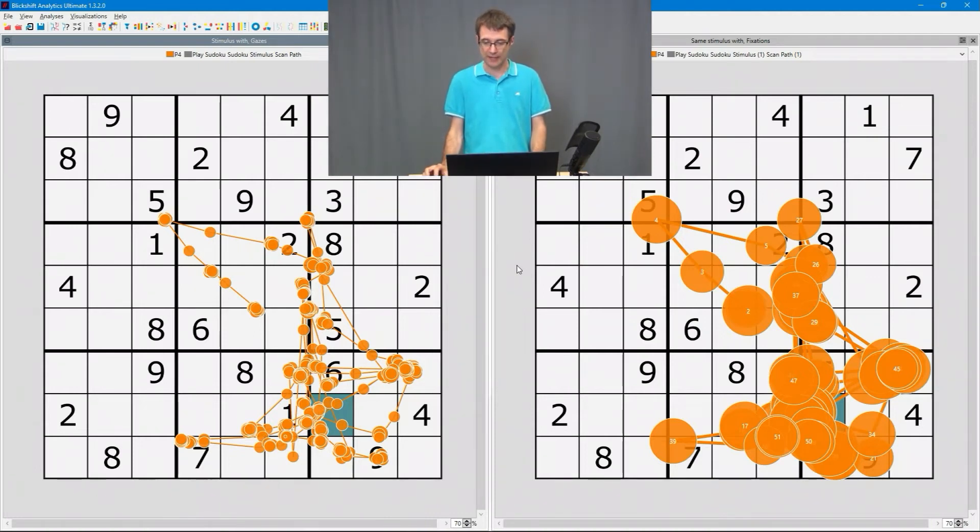And on the right side we can nicely see what I've told a minute ago. We can see for example that the first fixation or the second one in this case because the first one is covered by other fixations is located here in the center of the screen.